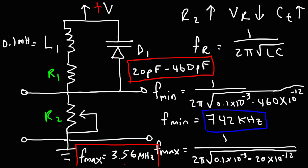The varicap diode is very useful for making high-frequency voltage-controlled oscillators or tuned circuits, because you can use a potentiometer to adjust the capacitance of the diode and thus adjust the resonant frequency of the circuit. For those who want more videos on electronics, feel free to check out the electronics playlist or the links in the description below. Thanks for watching.